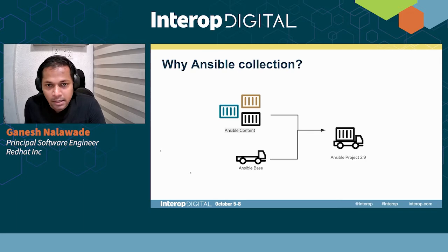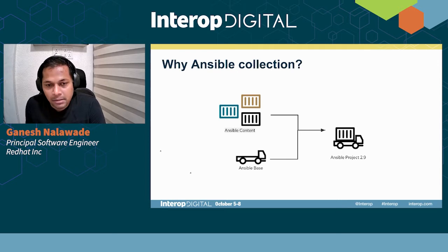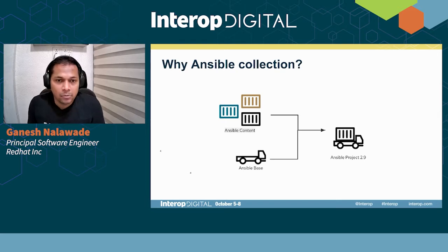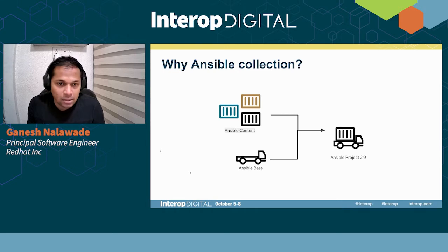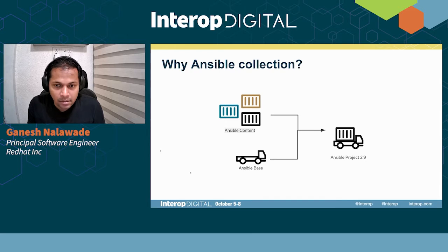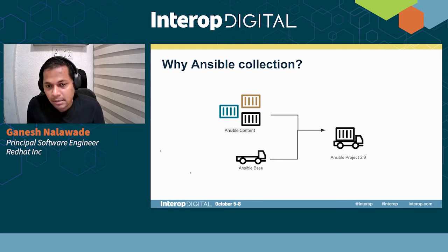The Ansible project before 2.9 consisted of two main parts: Ansible Base and Ansible Content. Ansible Base included things like the Ansible Engine, which is mainly responsible for loading inventory files, parsing playbooks, and running Ansible Content. Ansible Content mostly consisted of Python files — the tasks written in a playbook map to a Python file called an Ansible Module. Apart from modules, there are various plugins like Lookup Plugin and Filter Plugin that fall into the Ansible Content block. Combined, they formed Ansible 2.9, and when you installed Ansible you got both Content and Base as part of that package.